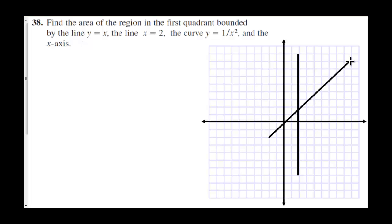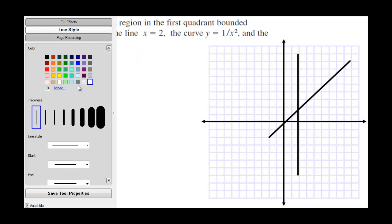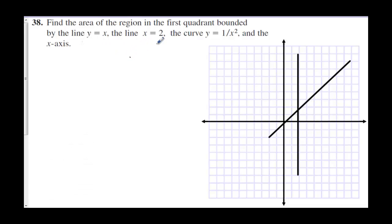And then the curve 1 over x squared. 1 over x squared looks a lot like 1 over x. Let's get this to be a color we can draw in. It looks like 1 over x, except we're going to square all the x values. That makes all the y values positive, and it goes up a little quicker because we're squaring the denominator.